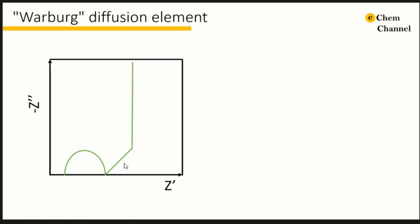So when you see a 45 degree line in Nyquist plot or the Warburg region, you can consider diffusion as a possible explanation.